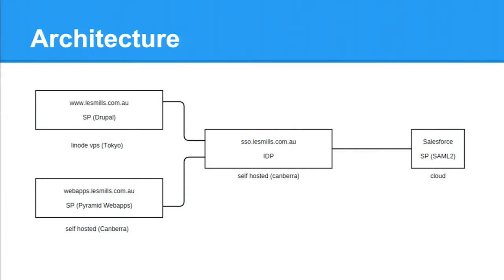Here's a diagram of the architecture in our system. On the left are the two service providers: www.lesmills.com.au and webapps.lesmills.com.au. The www one is running Drupal, hosted on a Linode virtual private server in Tokyo. Webapps.lesmills.com.au runs in our server room in Canberra, running Pyramid web applications written in Python. The identity provider is sso.lesmills.com.au, also self-hosted. To the right is Salesforce - we're currently integrating with Les Mills International, and the intention is that users sign into our system and can access Les Mills International systems transparently without entering a username and password.